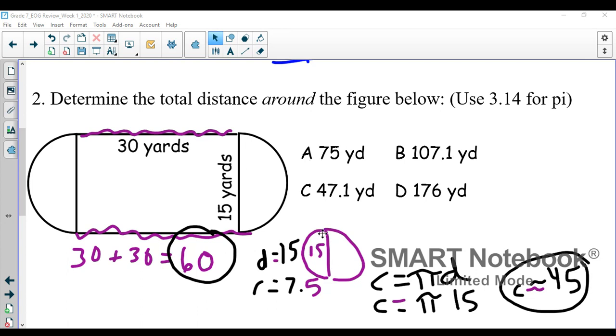If I put those two semicircles together, it forms one full circle, and the diameter of that circle is 15, it's given to us. So the diameter is 15, which means the radius is seven and a half.